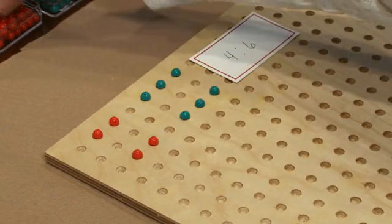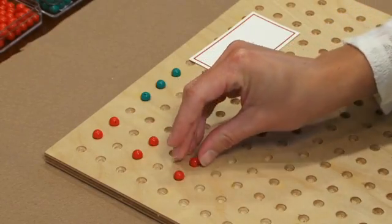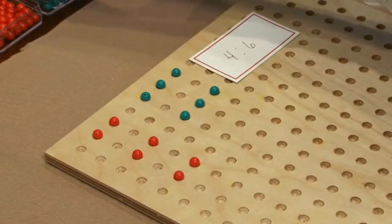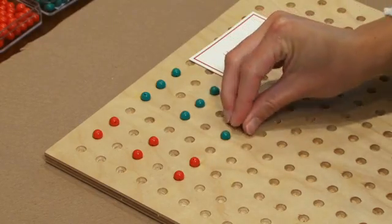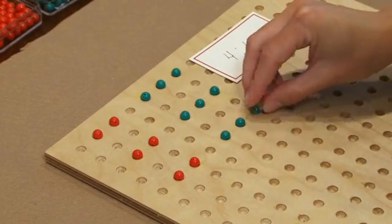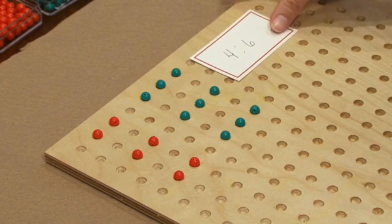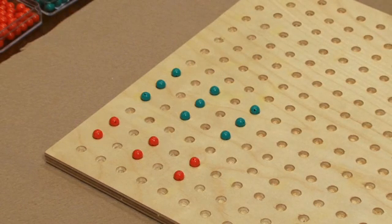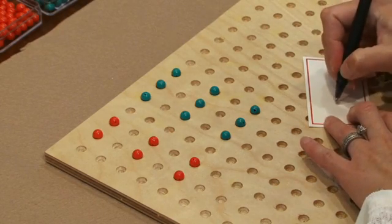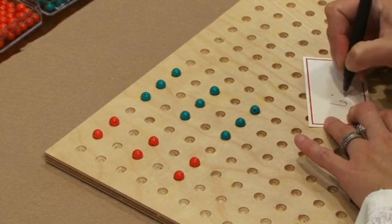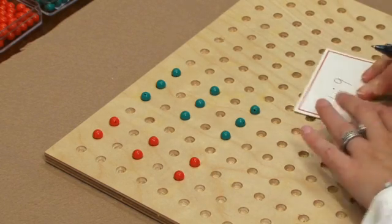Now we're going to add another row. So we have two more red pegs and three more green pegs. And I'll have the students write this new ratio. We have six red pegs to nine green pegs.